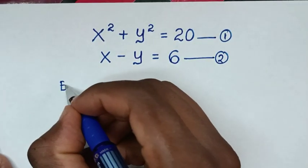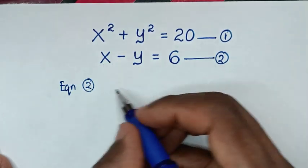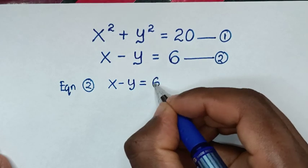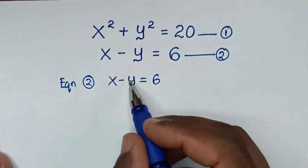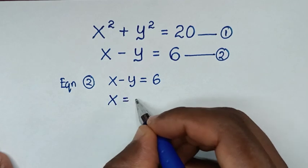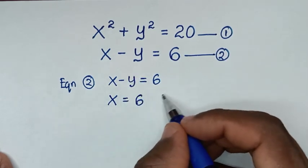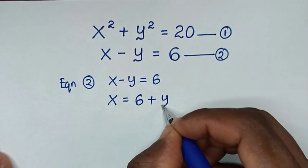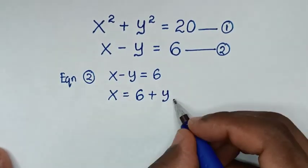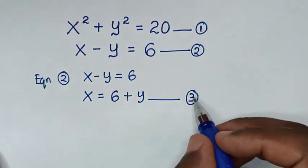From equation 2, which is x minus y is equal to 6, we take the negative y to the other side, so it will be x is equal to 6 plus y. We call this equation 3.